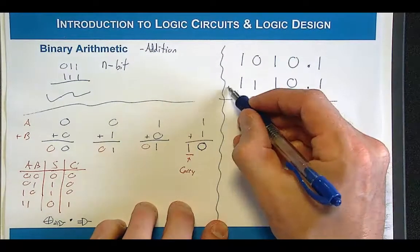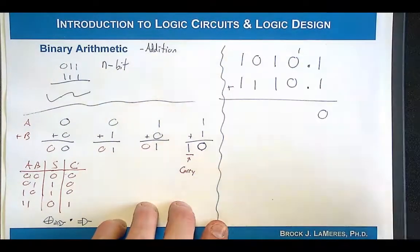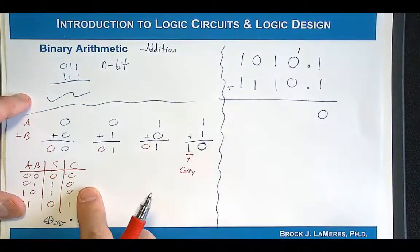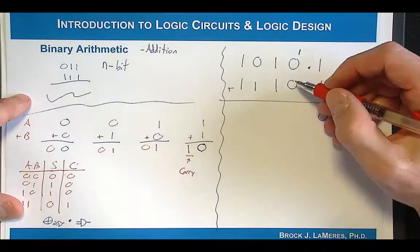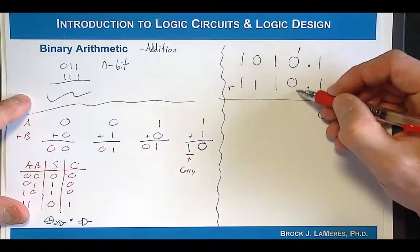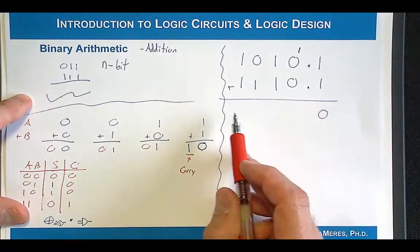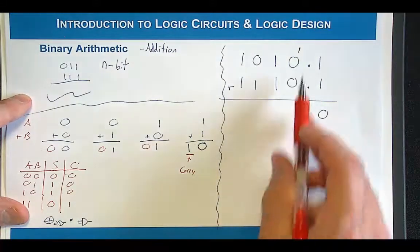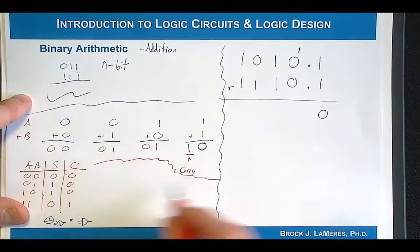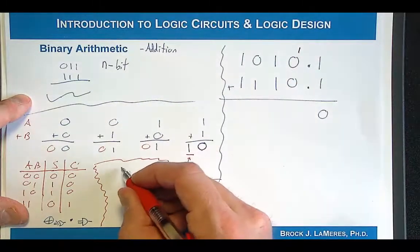We're going to perform binary addition: 1 plus 1 is 0 with a carry, so we have a carry immediately. Now we're already at a situation where our simple adder didn't work because now we have 3 inputs. We need to think about what the sum is when we have 3 inputs. As we propagate from right to left, from least significant to most significant, 3 inputs really is the most we're ever going to have. So let's jot this down to keep it straight.